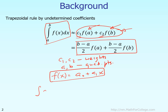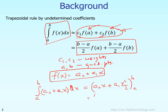If we calculate this integral exactly from A to B, we get A-naught times X plus A1 times X-squared over 2, evaluated from lower limit A to upper limit B. This gives us A-naught times (B minus A) plus A1 times (B-squared minus A-squared) over 2.